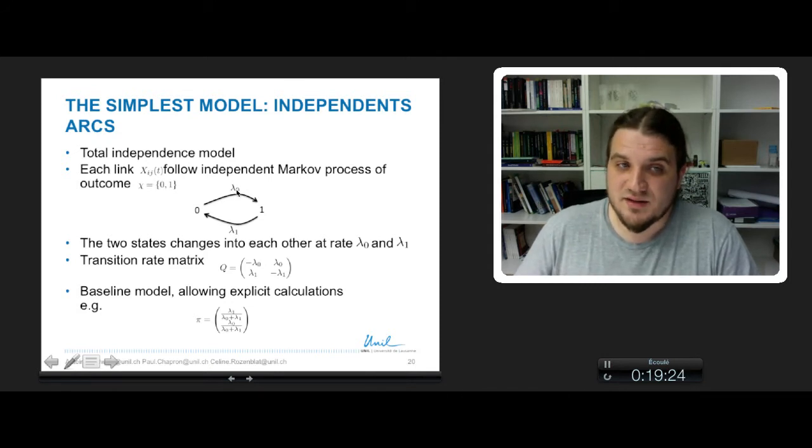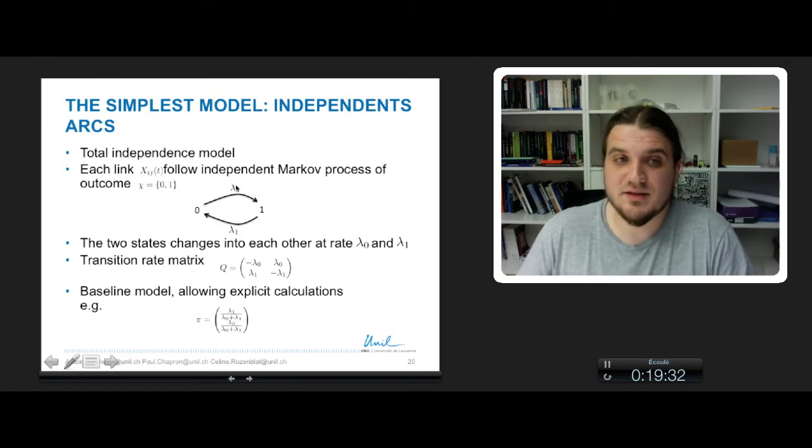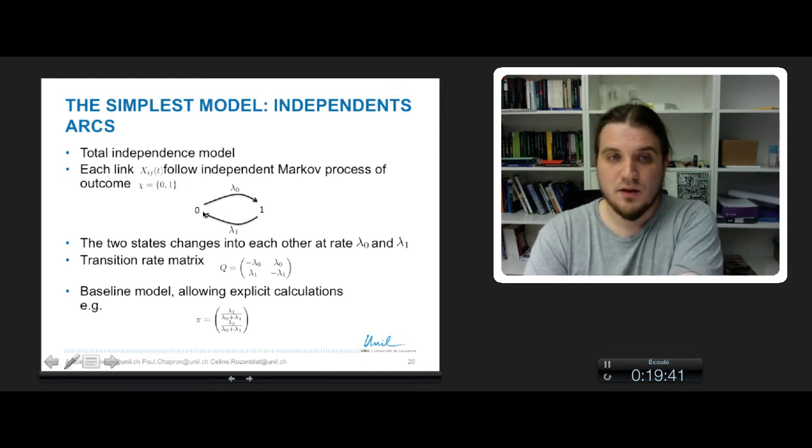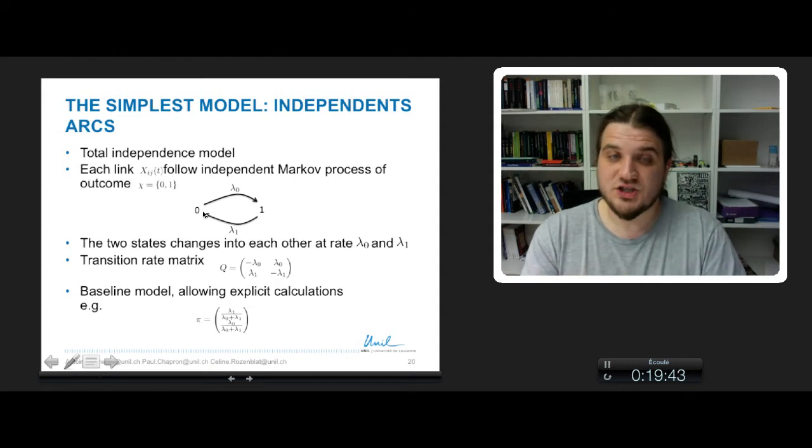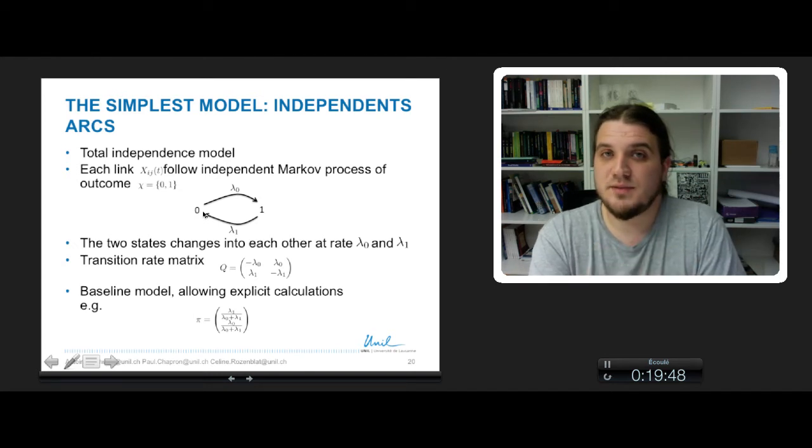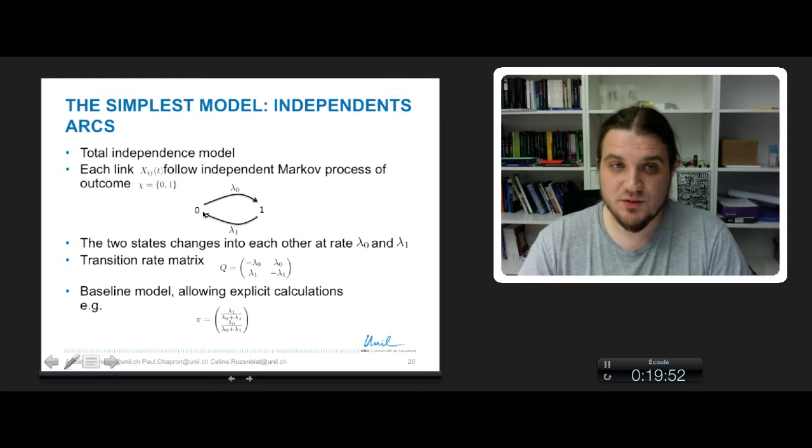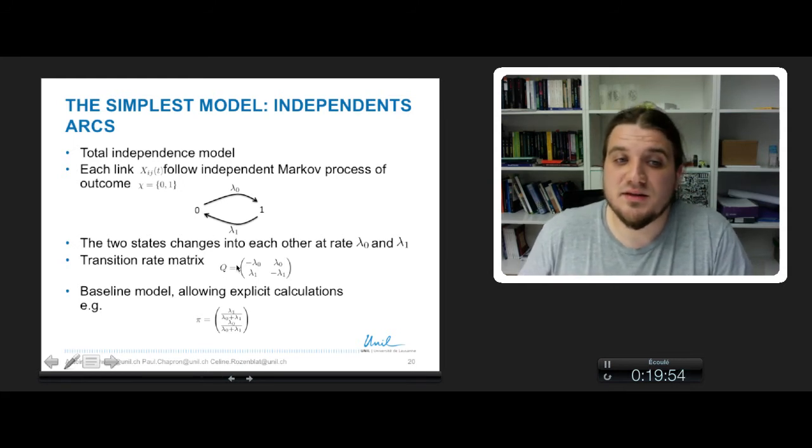We define lambda 0 to be the rate of change from 0 to 1, so the rate of apparition of links, and the rate lambda 1 to be the rate of disparition of links from state 1 to 0. The two states change into each other at rate lambda 0 and lambda 1. The transition rate matrix capital Q can be defined as this expression.